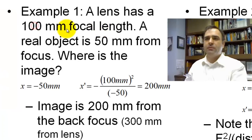Example 1, we have a 100mm focal length lens, and there's a real object 50mm from the front focus. Where is the image?